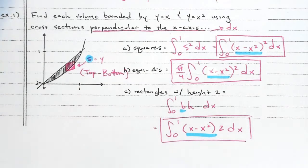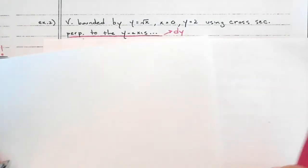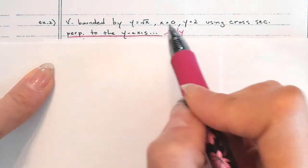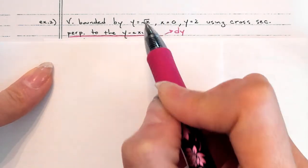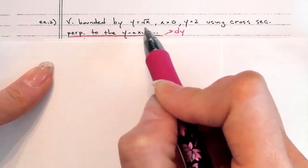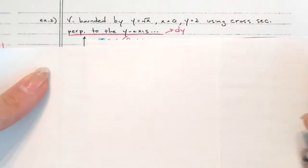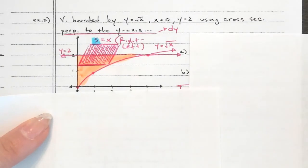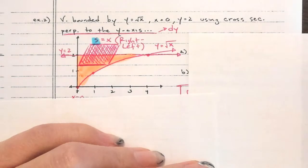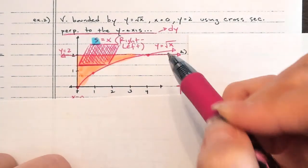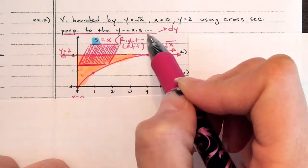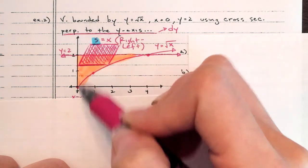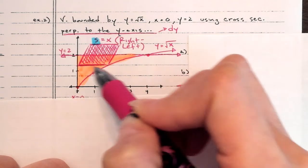Now for number two, you have to draw your own picture. Start by graphing the easy parts — this is the y-axis and this is the horizontal line. Plug in 0, plug in 1, plug in 2 (sad face, doesn't work), plug in 4 and you get 2. So graph it out and you get a curve. I drew it this way because I'm perpendicular to the y-axis — perpendicular to the y-axis means I'm going left and right, so all my cross-sections go left and right.